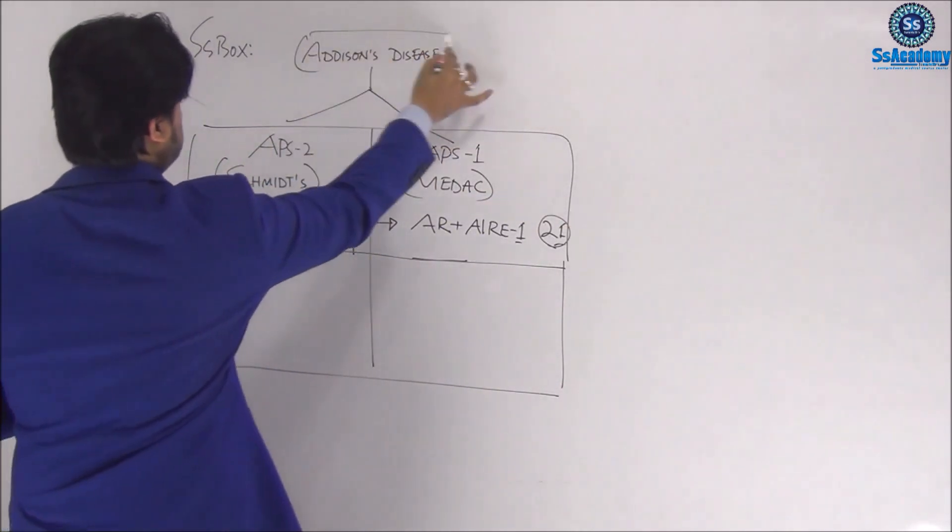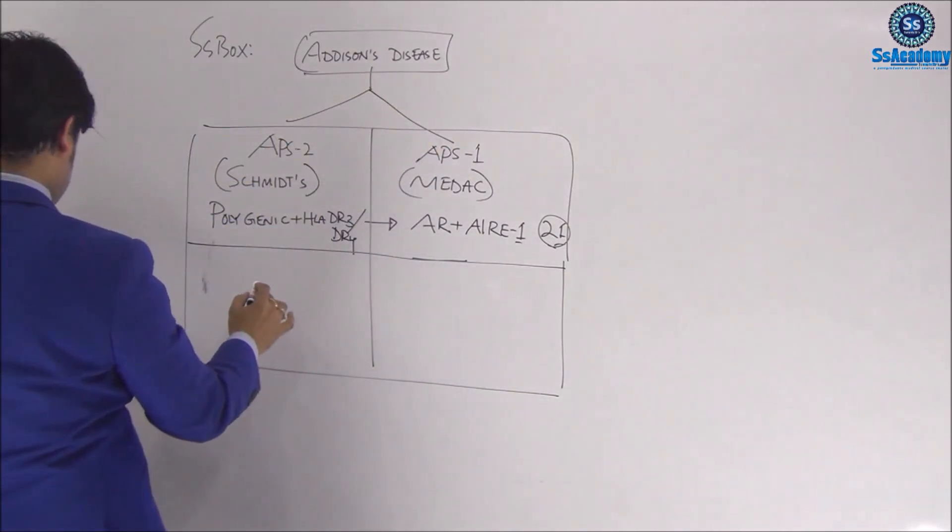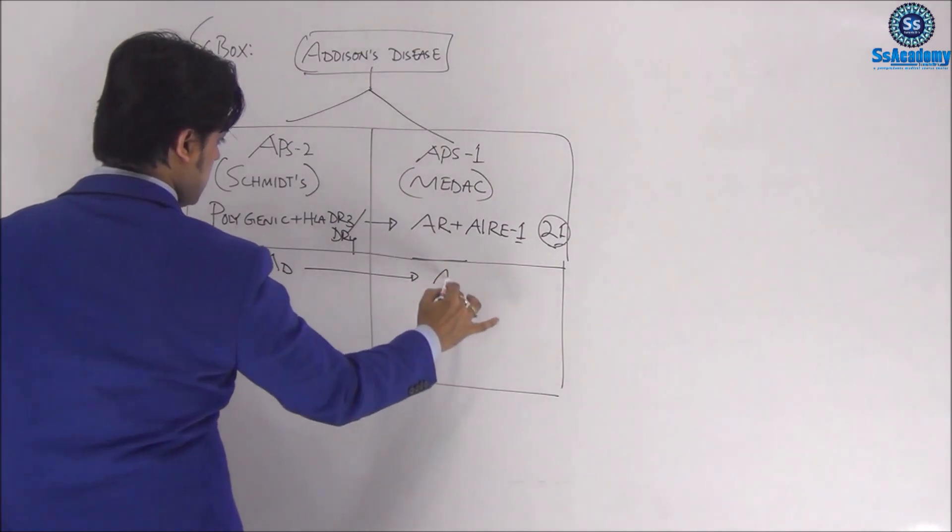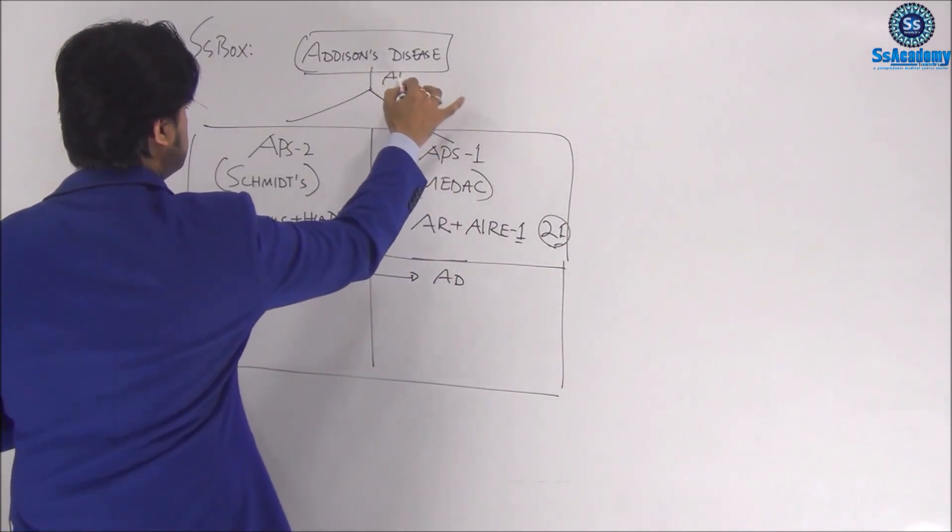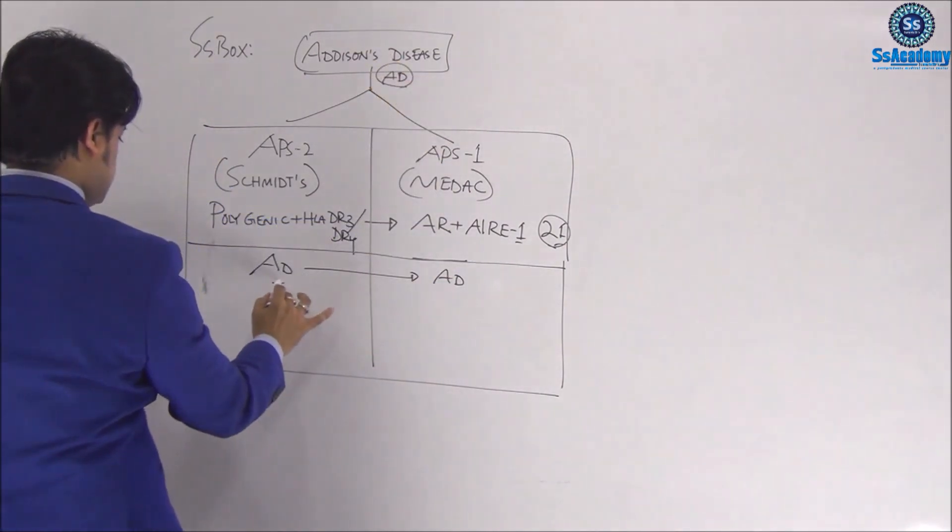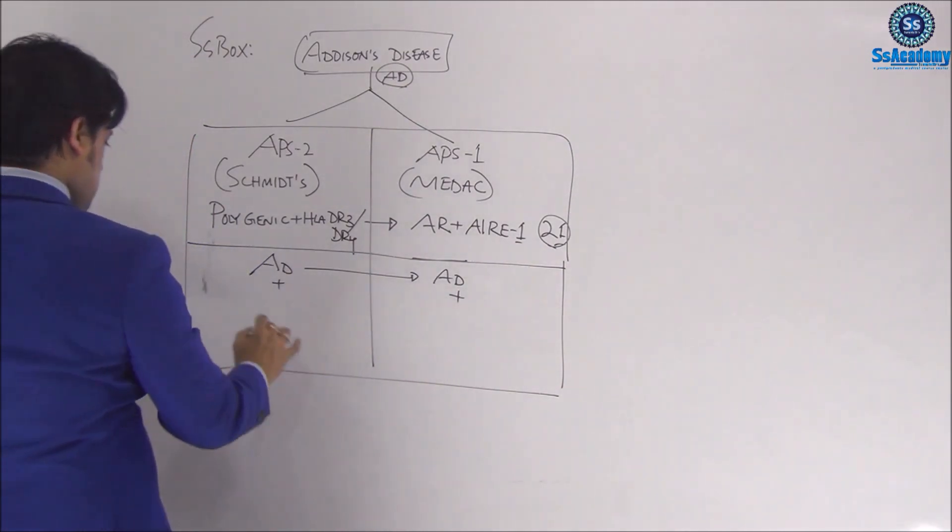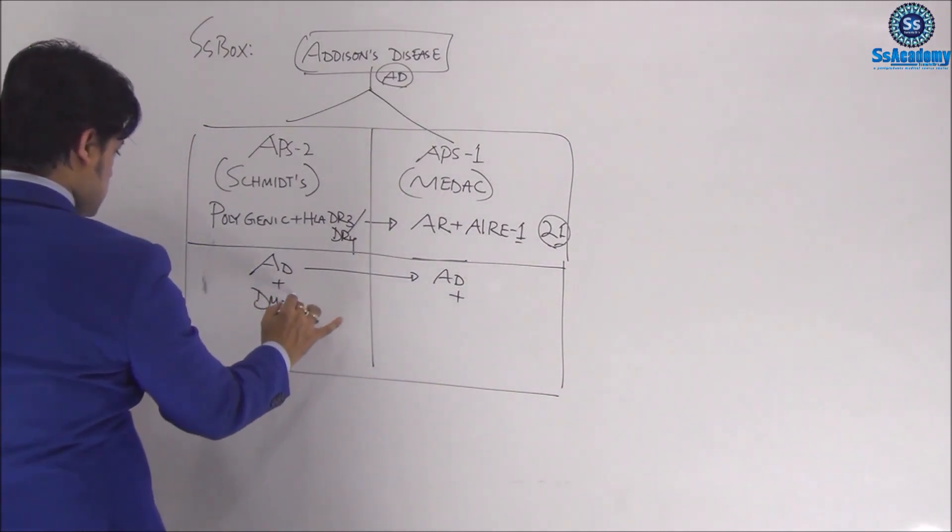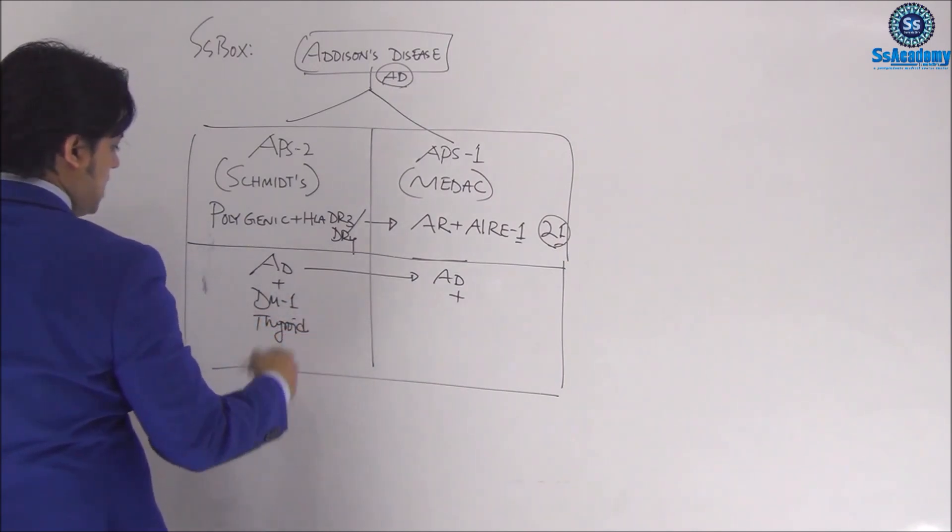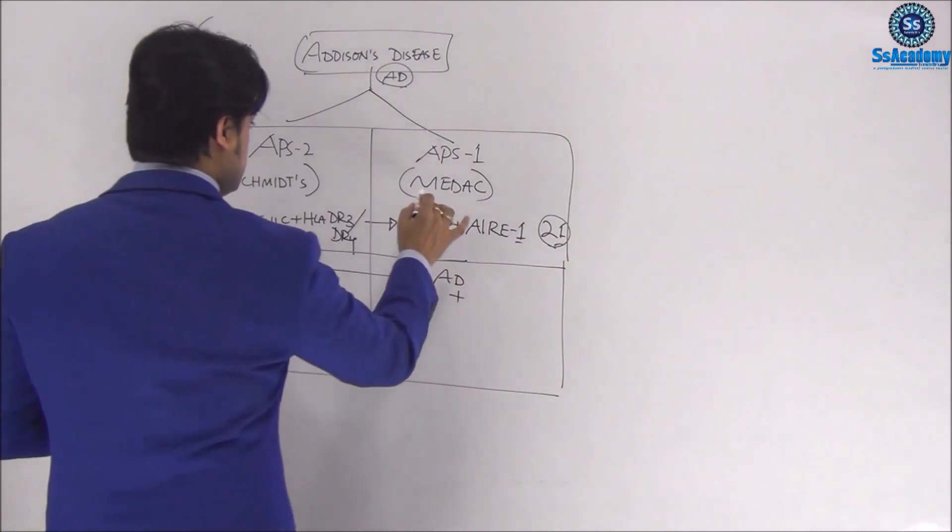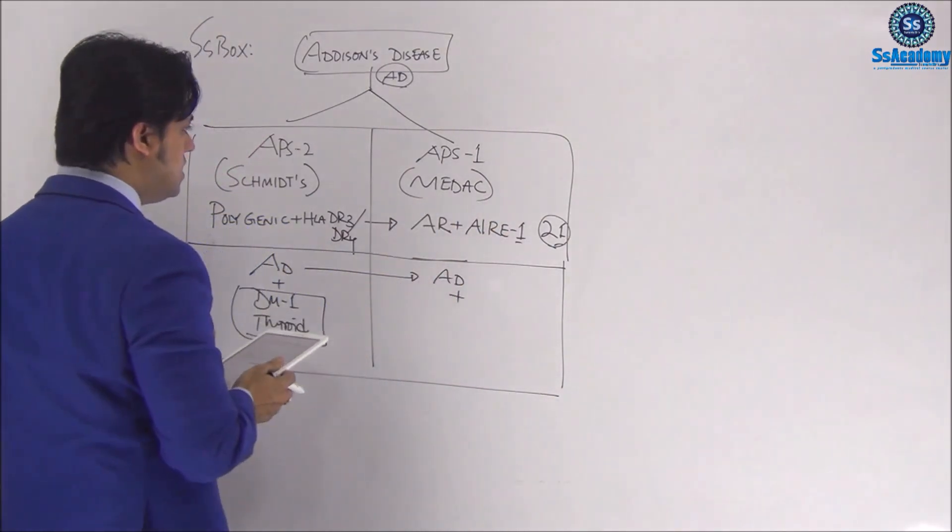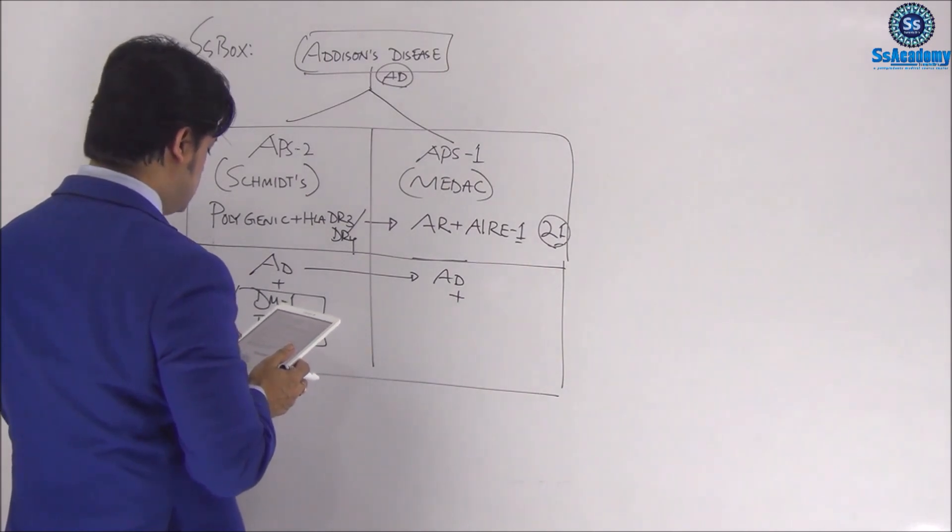Both have Addison's disease. Now I am putting AD plus, plus. Here is type 1 diabetes and autoimmune thyroid disease—maybe hypo- and hyperthyroidism. In contrast, MEDAC is multiple endocrine deficiency-autoimmune candidiasis, so the most important feature is...